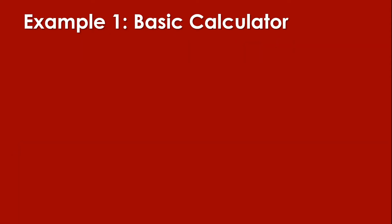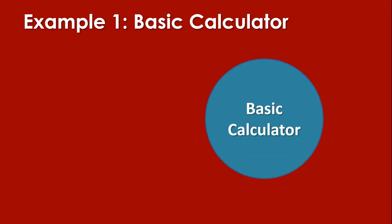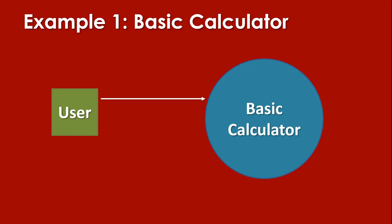Let's have an example. Let's say we're going to have the basic calculator. First, we have the process. Inside the process, we have the system which is named basic calculator. If we are talking about the basic calculator, we have what we call the user. The user is the one who uses the calculator.